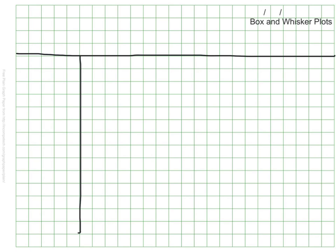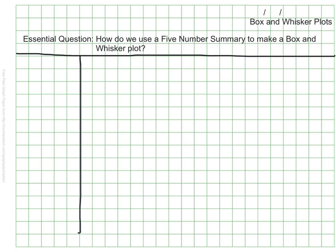This video is going to cover the topic of box and whisker plots, also sometimes just called box plots. I've already started to set up my page with my margins, date, and topic. Now it's time to put the essential question in: how do we use a five-number summary to make a box and whisker plot? First, let's find out what a box and whisker plot is.